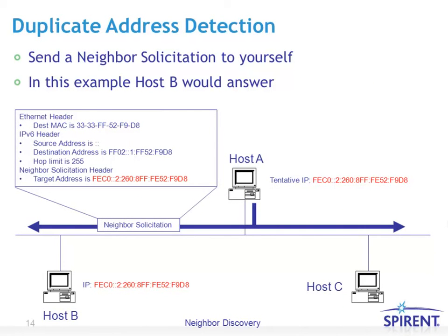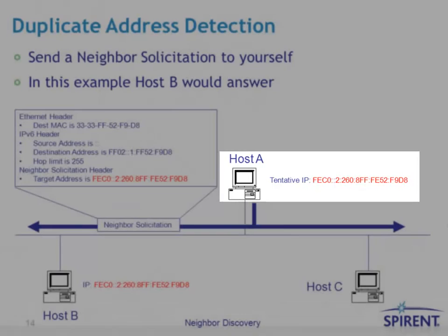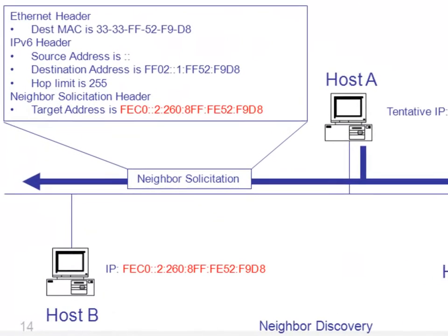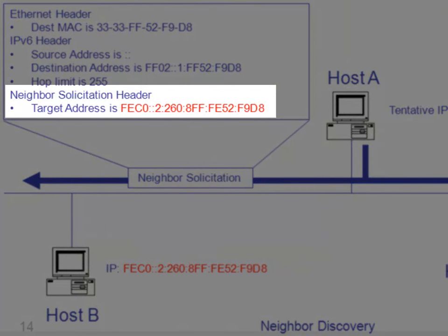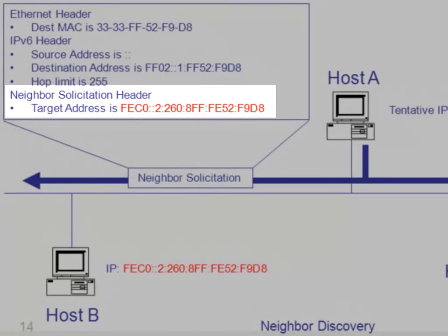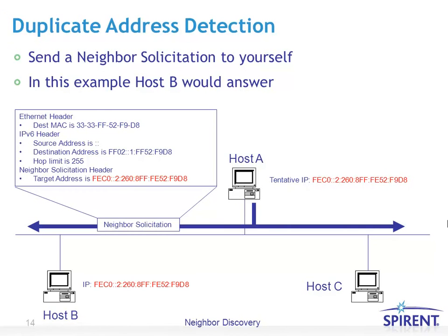Duplicate address detection is used when a device first boots up and attains its IP information, to determine if the configured IP address is already in use by another host. You send a neighbor solicitation — a multicast solicitation based on your own configured IP address — convert your unicast IP address to its SNM address, map that to a multicast MAC address, send it out, and see if anybody else responds. If another host is also listening to that destination multicast MAC and the target address in the neighbor solicitation header matches it, they respond and you know your configured address is already in use.